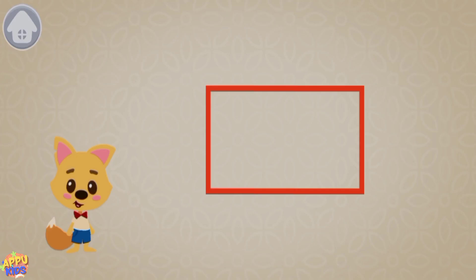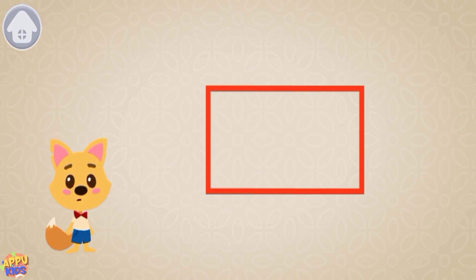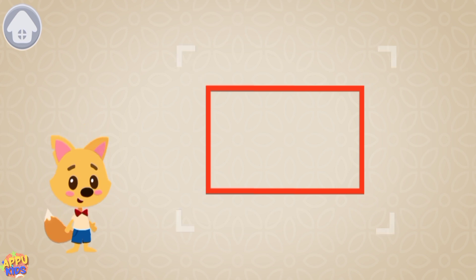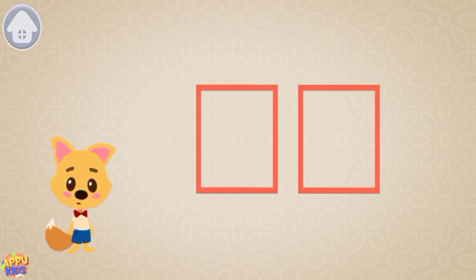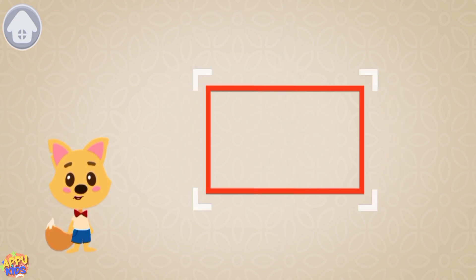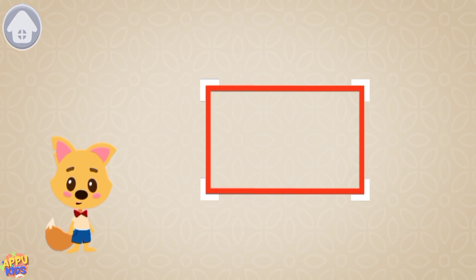This is a rectangle. It has four angles: one, two, three, four. The rectangle and the square are similar, but the rectangle can be higher or wider than the square.